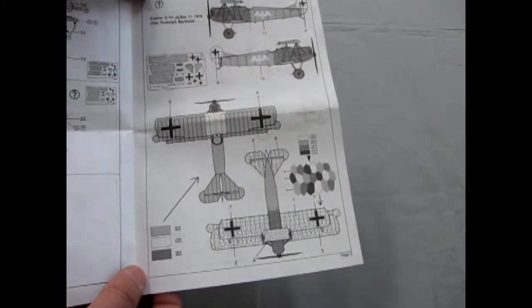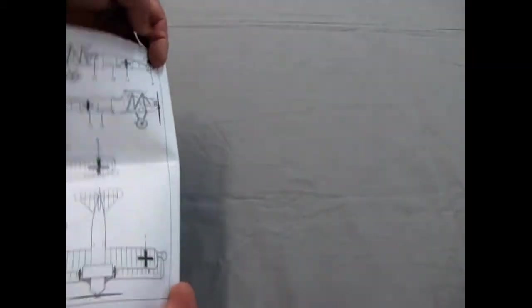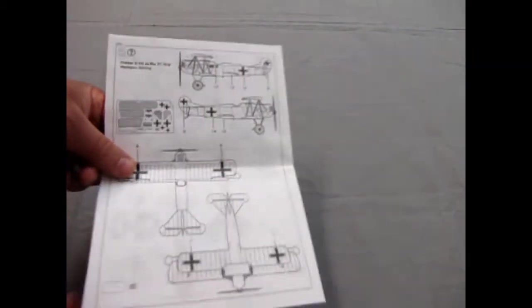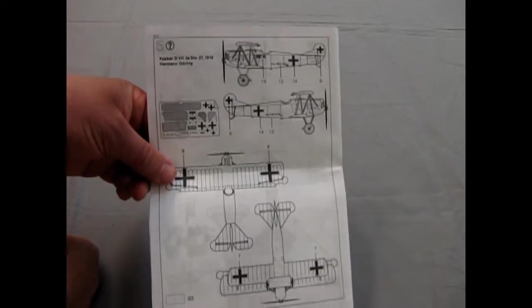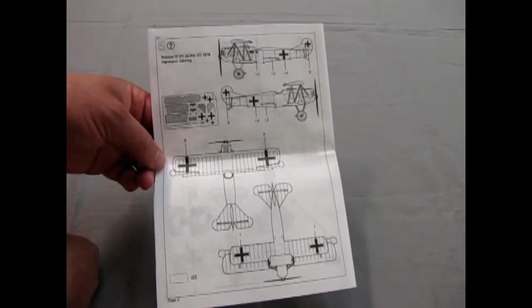It's not like the Fokker D7 from Roden that I showed last week where it's actually got a decal painted like that, but here is the one from Herman Goering and this plane is pure white so very easy to paint and now let's actually look at the decals.